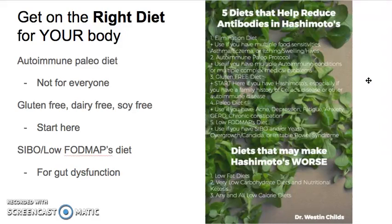Number three would be the SIBO or low FODMAPS diet. SIBO stands for small intestinal bacterial overgrowth, and this is a condition that patients with hypothyroidism or Hashimoto's are extremely susceptible to. Something like 54% of hypothyroid patients actually have this condition. If you have SIBO or yeast overgrowth — which tend to go together — it is an inflammatory condition that will make your autoimmune disease worse, cause low-grade gut inflammation, and decrease T4 to T3 conversion.